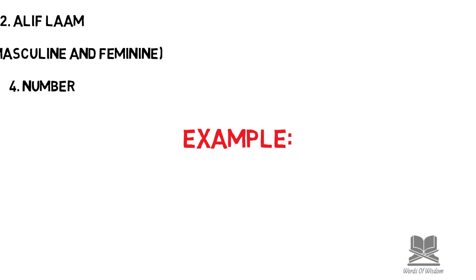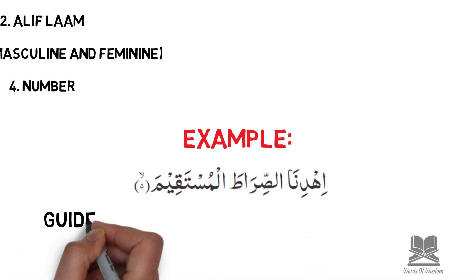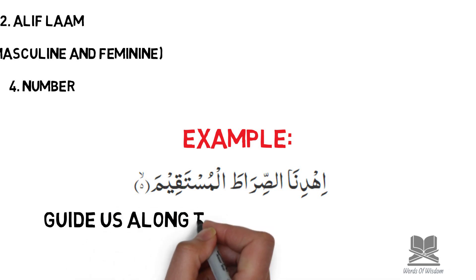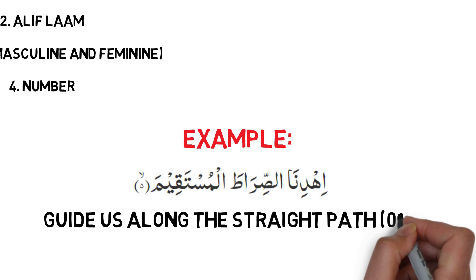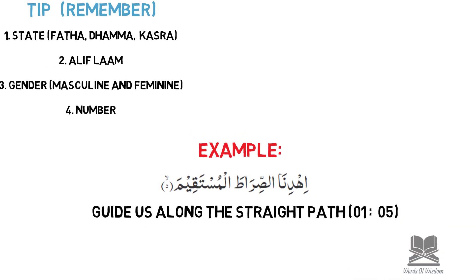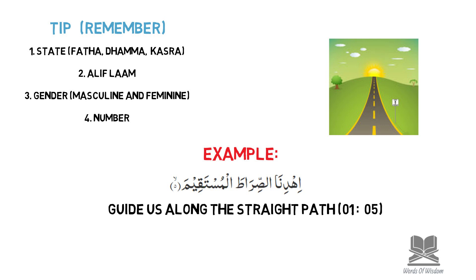Let us take an example from the Quran focusing on these four aspects. In Surah Al-Fatihah, Allah subhanahu wa ta'ala says: 'Ihdina al-sirat al-mustaqim' — guide us towards the straight path. Our focus is on 'al-sirat al-mustaqim', meaning the straight path. The path is being described and the word being used is 'straight', telling you what kind of path it is.